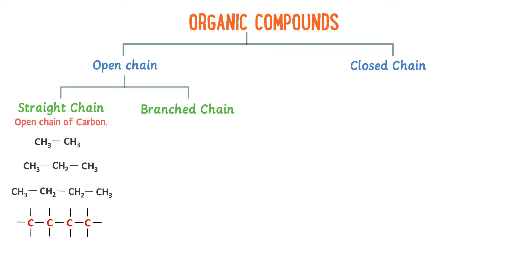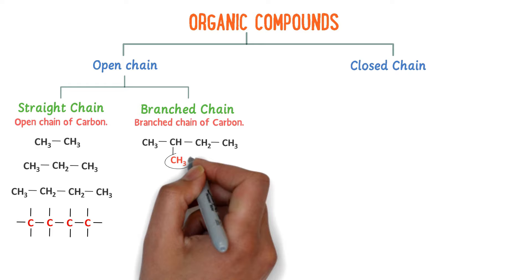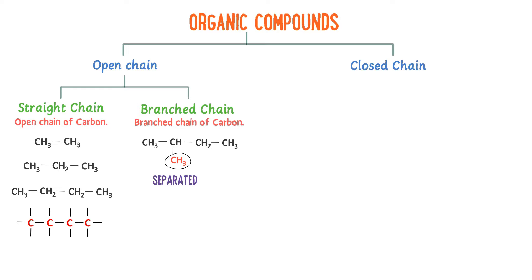On the other side, branched-chain organic compounds are those compounds which contain a branched chain of carbon atoms. For example, isopentane. In this molecule, four carbon atoms form a straight chain, but the fifth carbon is separated from the open chain and linked with the second carbon atom, forming a branched chain.